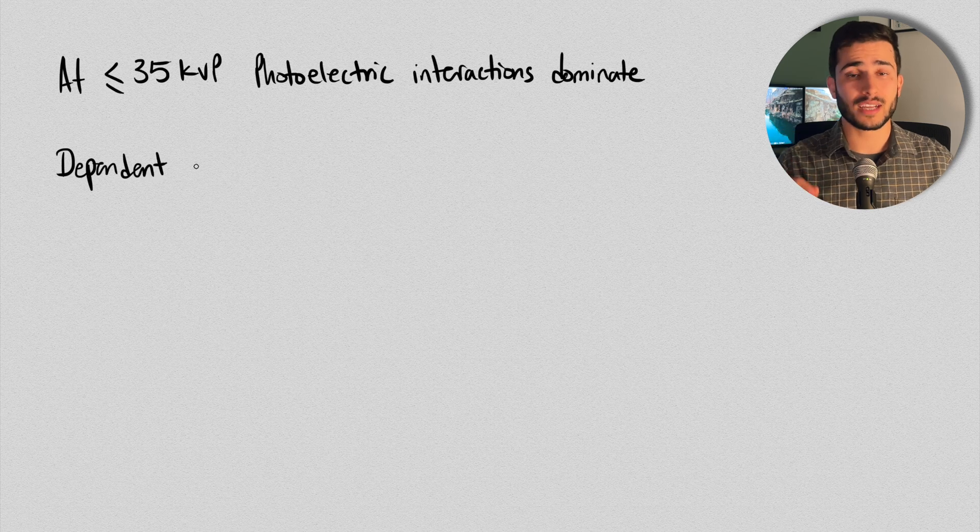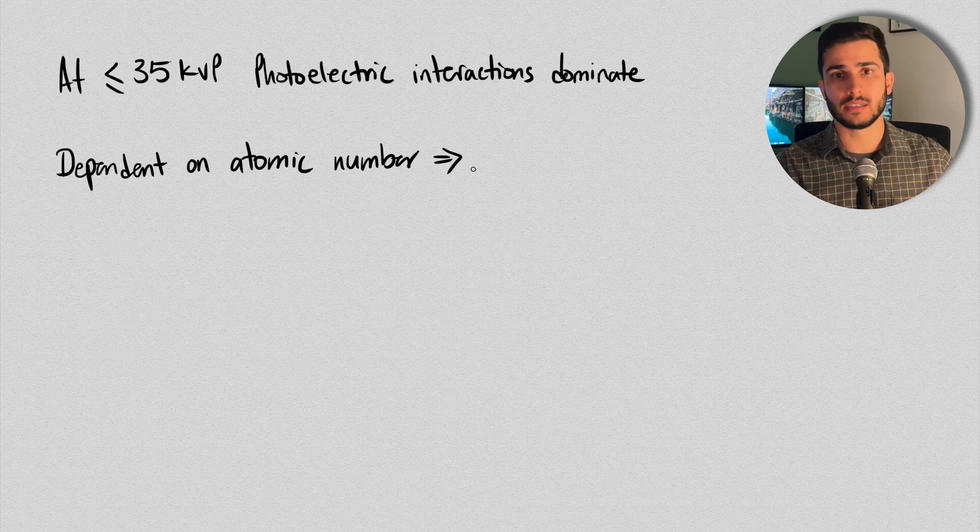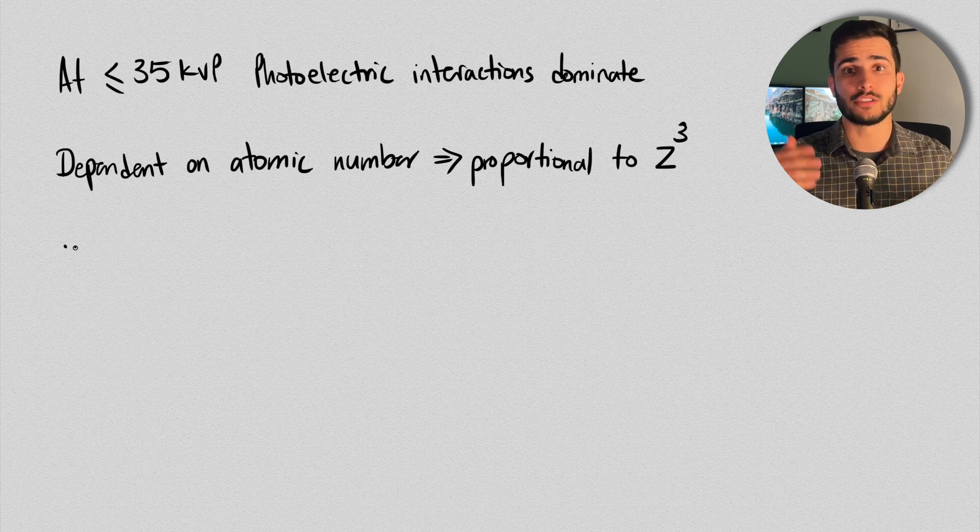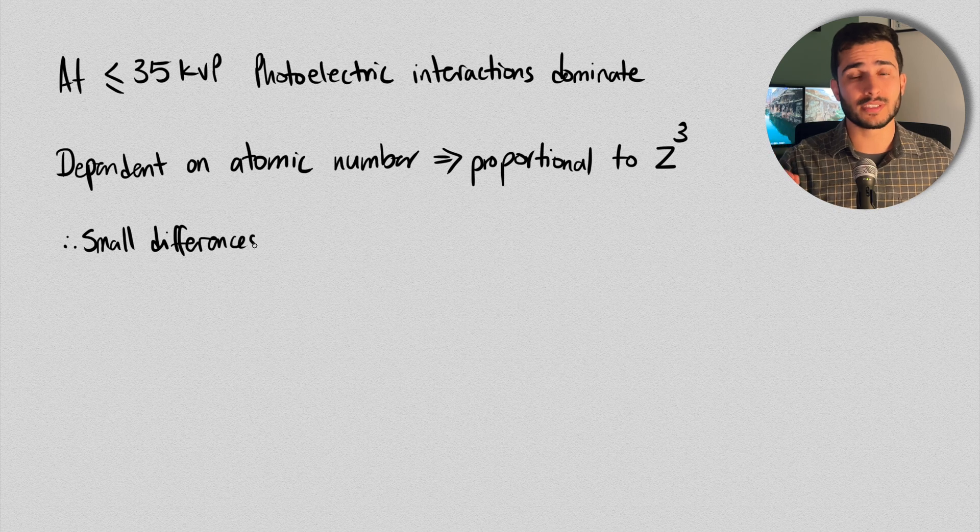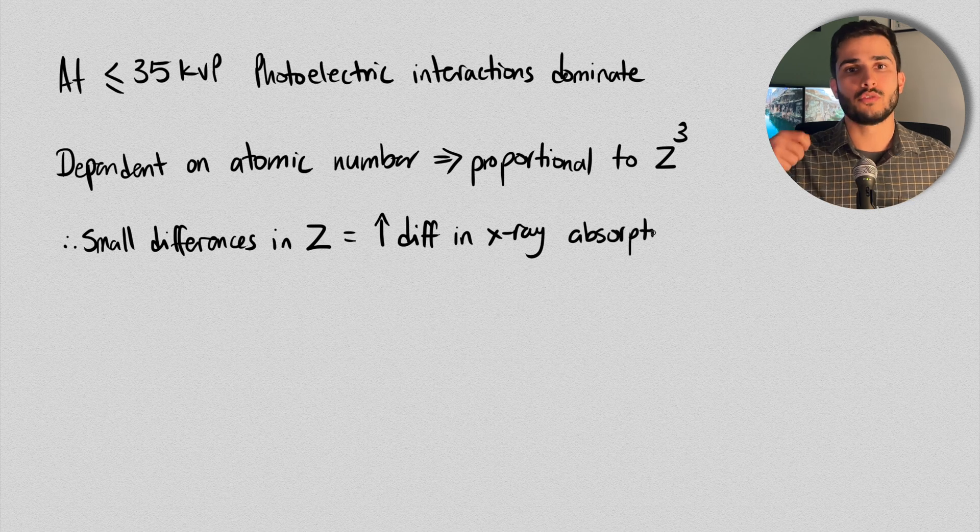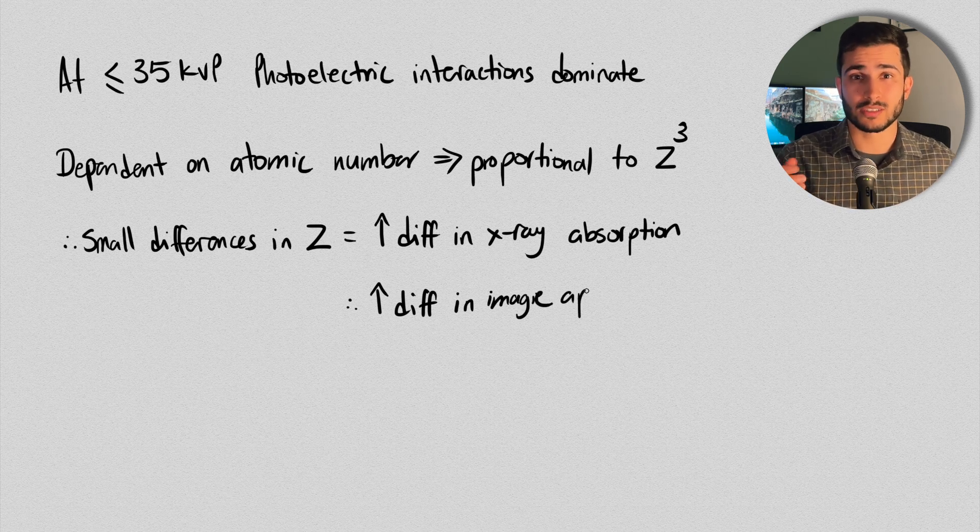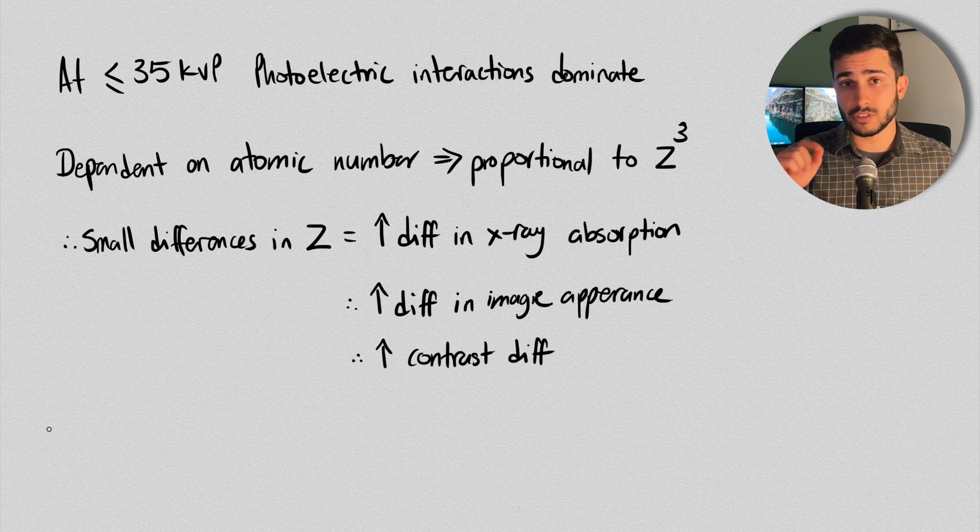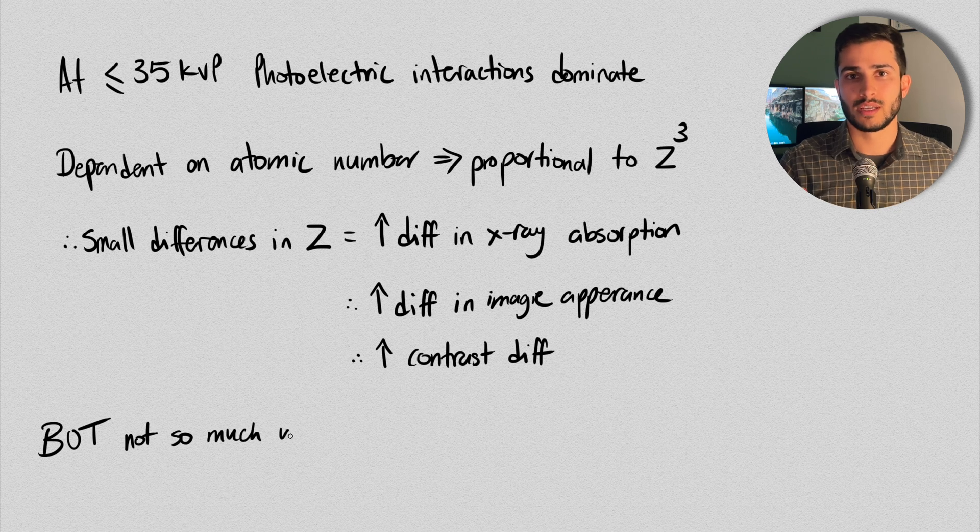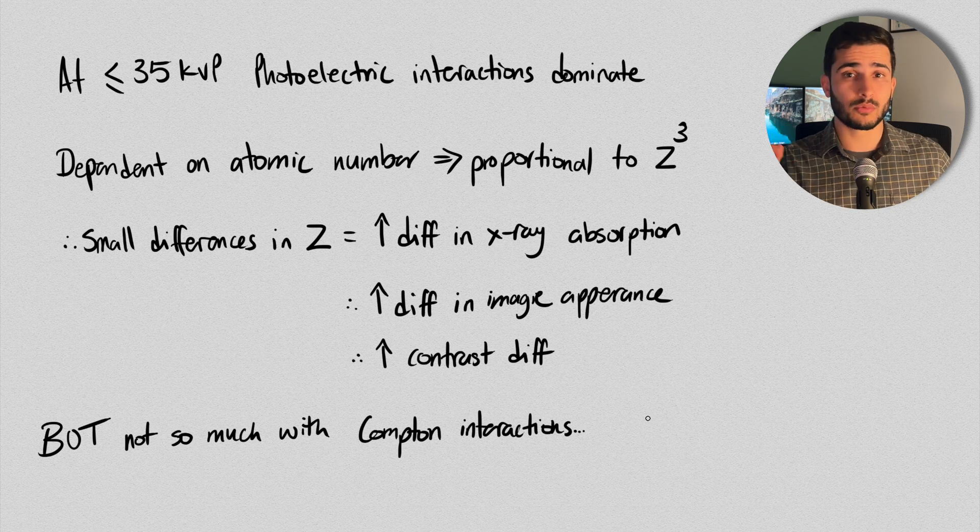And the interesting thing about that is that the likelihood of photoelectric interactions occurring is highly dependent on the atomic number or Z of the elements in that tissue. In fact, the probability is proportional to the cube of the atomic number, i.e. Z³, which means that even small differences in atomic number can lead to significant differences in how the X-rays are absorbed and therefore how your image looks, which results in an image that has more contrast because contrast is all about being able to better differentiate between the different densities in the body.